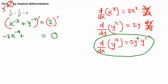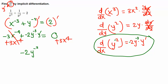So applying the power rule: negative 2 minus 1 gives negative 3, times the derivative of y, which is y prime (dy/dx). The calculus is done — now we just solve for y prime algebraically. Move the x term over by adding 3x to the negative 4 to both sides, leaving negative 2y to the negative 3 times y prime equals 3x to the negative 4.